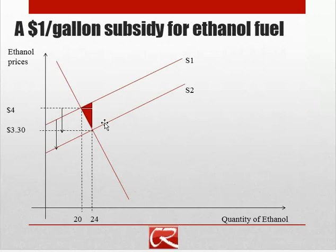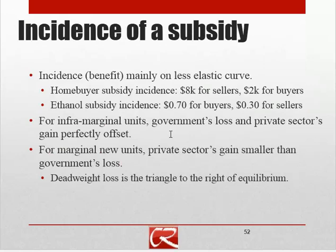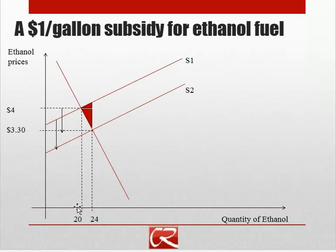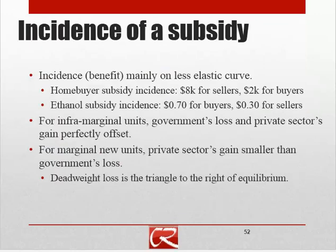In our ethanol subsidy example, we had a $1 subsidy that pushed prices down by $0.70. Buyers are $0.70 better off from the lower price. Sellers got paid $1 but receive $0.70 less, so on net they're $0.30 better off. For the inframarginal units — those transacted before the subsidy — the government spends $1 but nobody's behavior has changed, so there's no impact on economic efficiency.